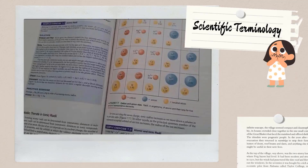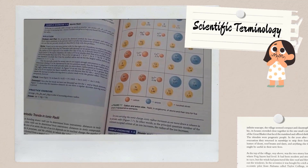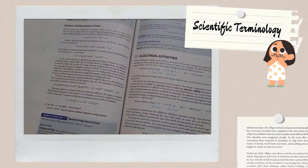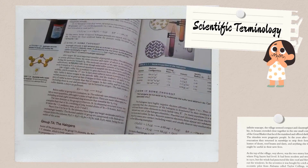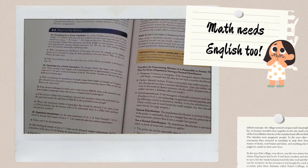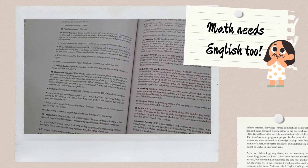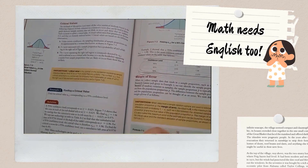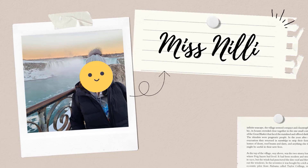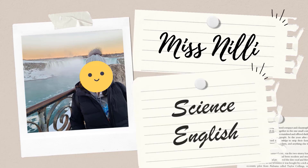When I was a science student at the University of Toronto, I always thought that I didn't really need to be good at English. However, as my study progressed, I realized that being a science student means you need to be good at English even more. There are lots of scientific terminology and the writing styles are quite different. Therefore, I decided to make this series of videos to specifically talk about science English.